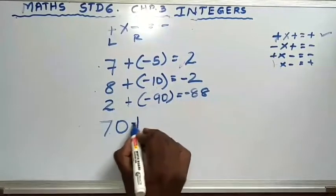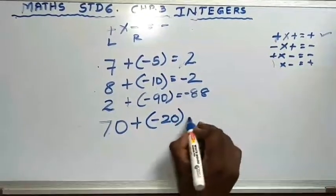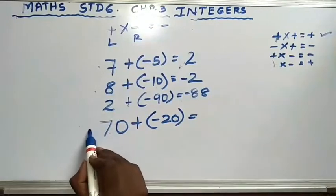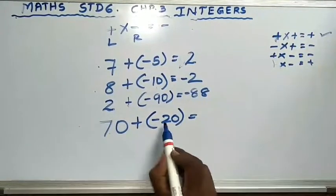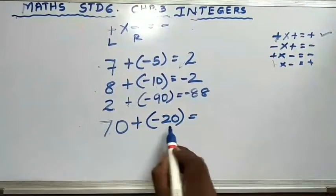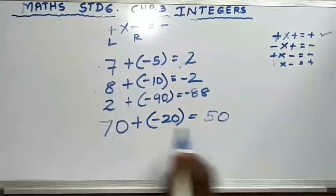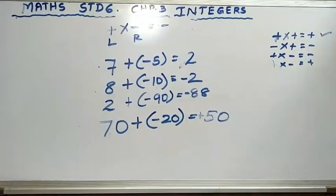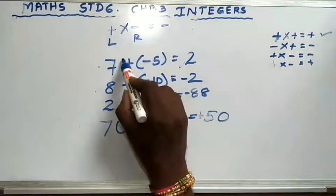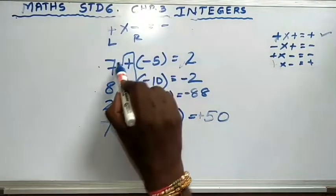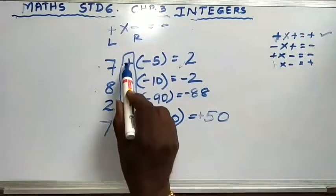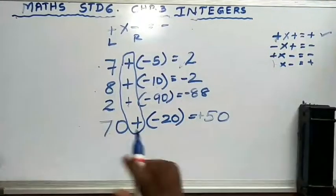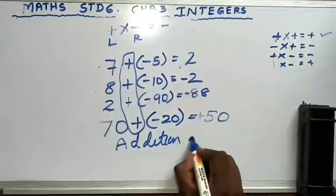Let's take one more number: 70 plus minus 20. Left side plus, right side minus — so subtract. 70 minus 20 is 50. Which number is greater? 70. And 70 has a positive sign, so the answer is plus 50. This is the addition of integers. What you have learned is the sign in the middle of the two numbers is positive.